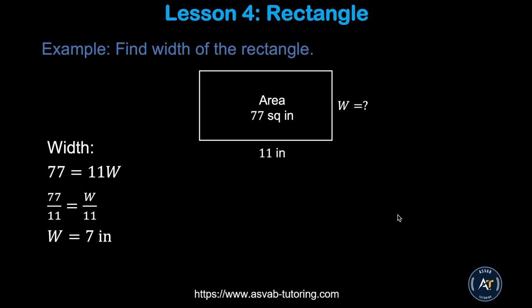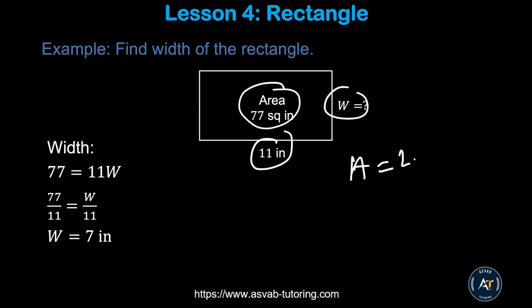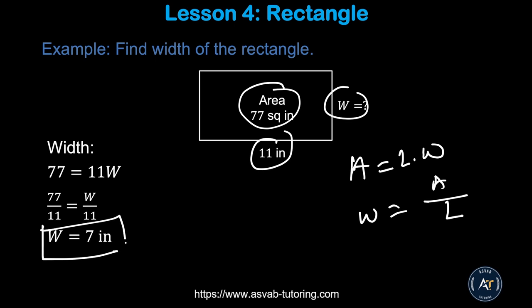In this problem the area is given as 77 and one side is 11 — you have to find the other side. You know that area equals length times width, so width equals area divided by length. Using that formula, width equals 7 inches.